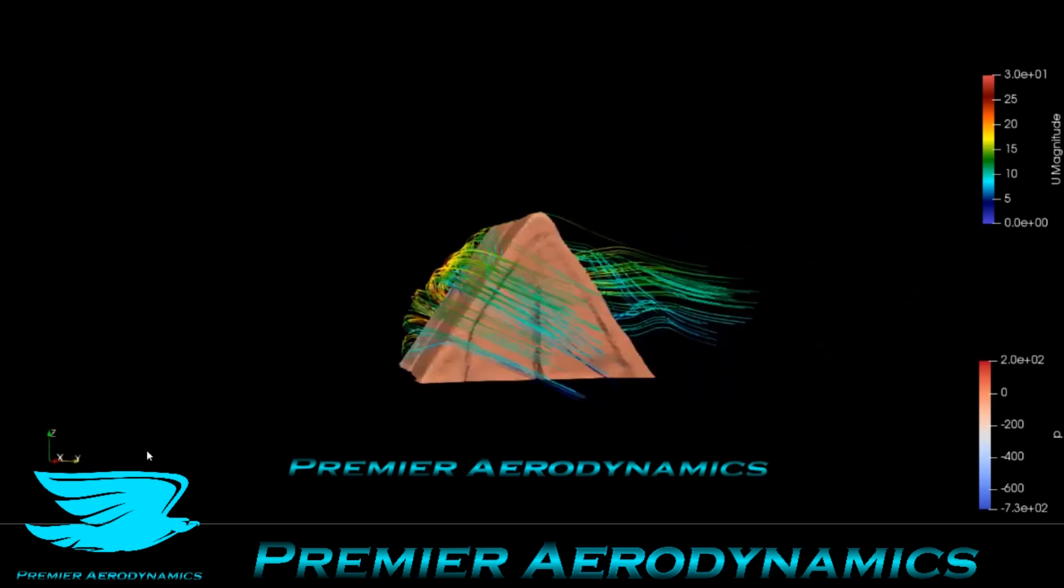And so just there you can see how close the streamlines are to the edges, to the top and bottom, but around the middle, it's much further away from the actual surface of the tent.